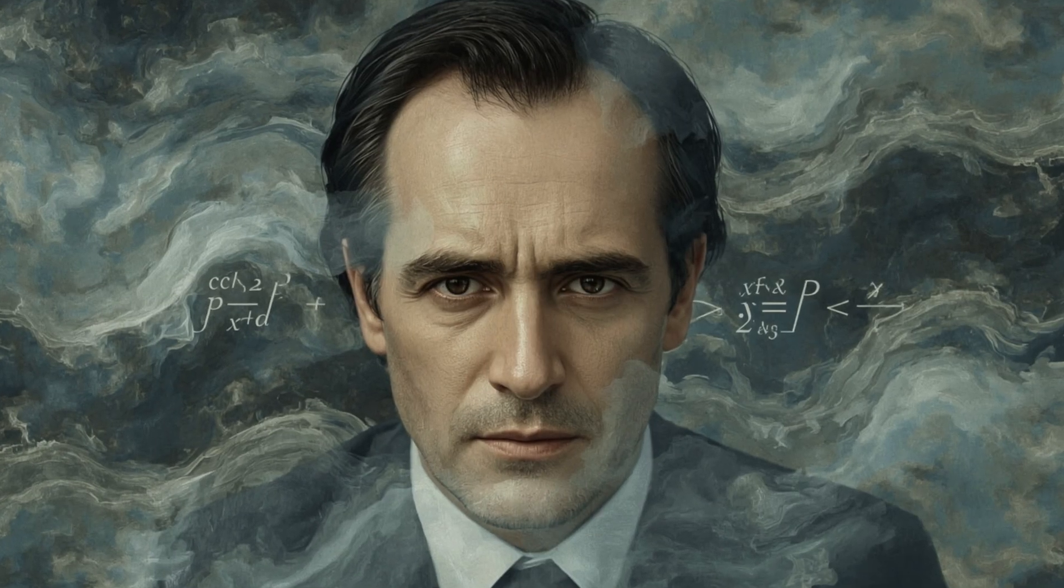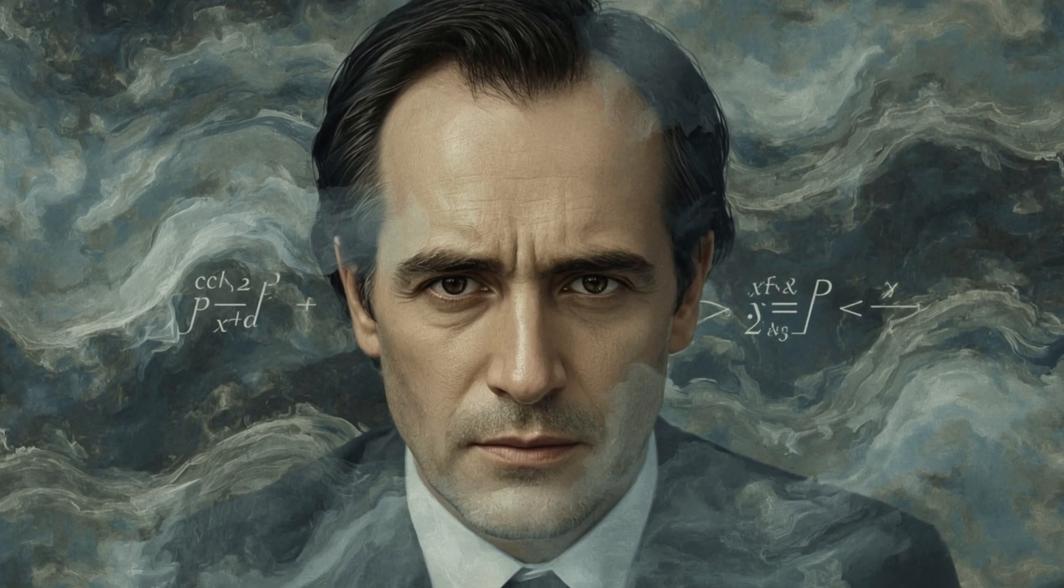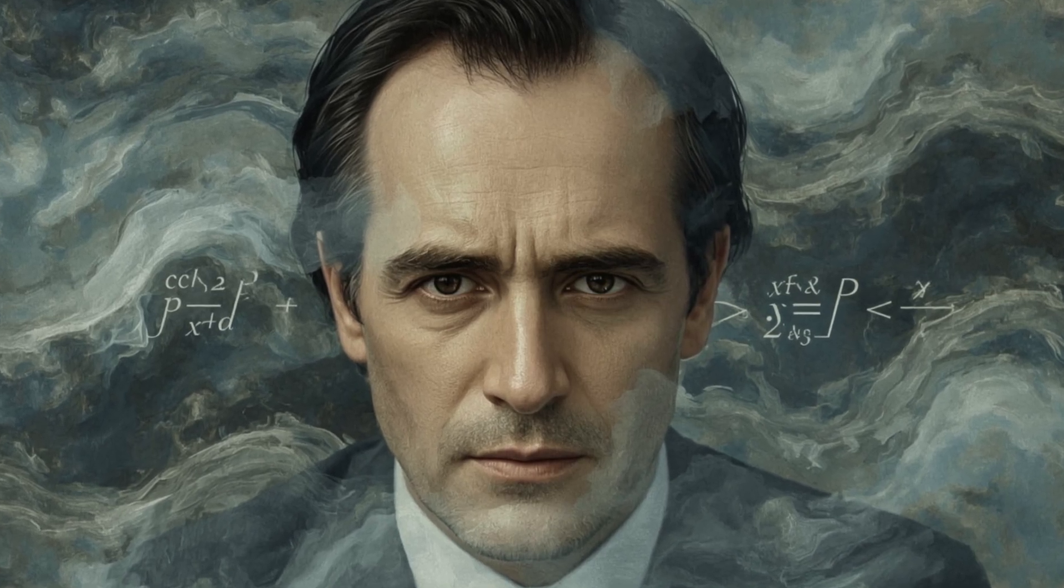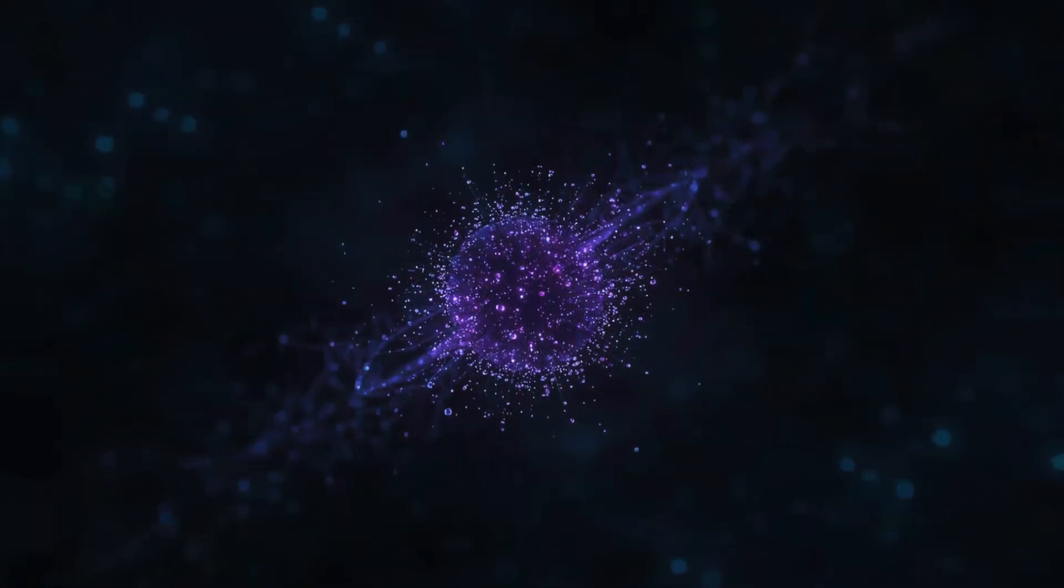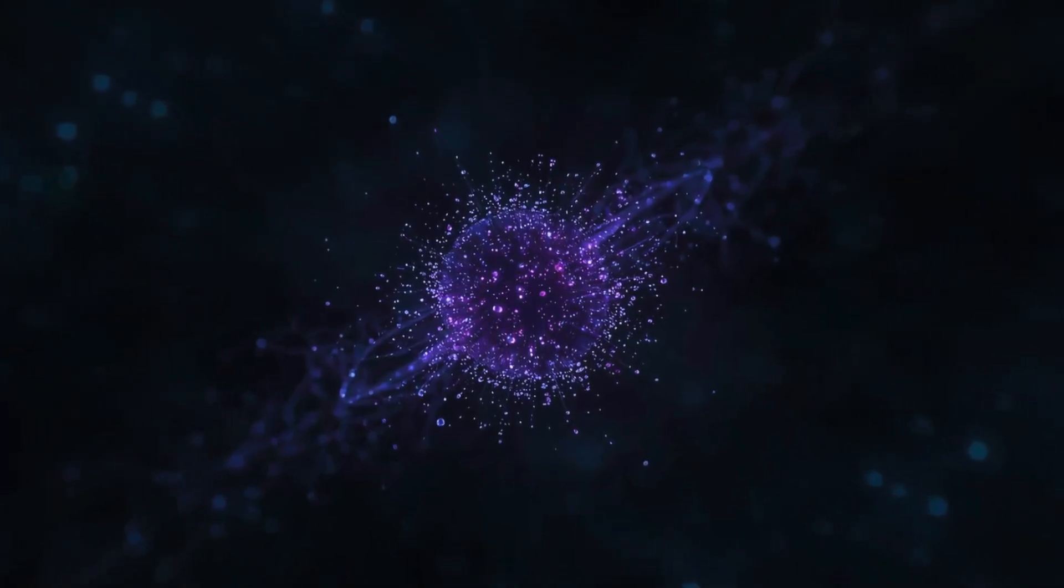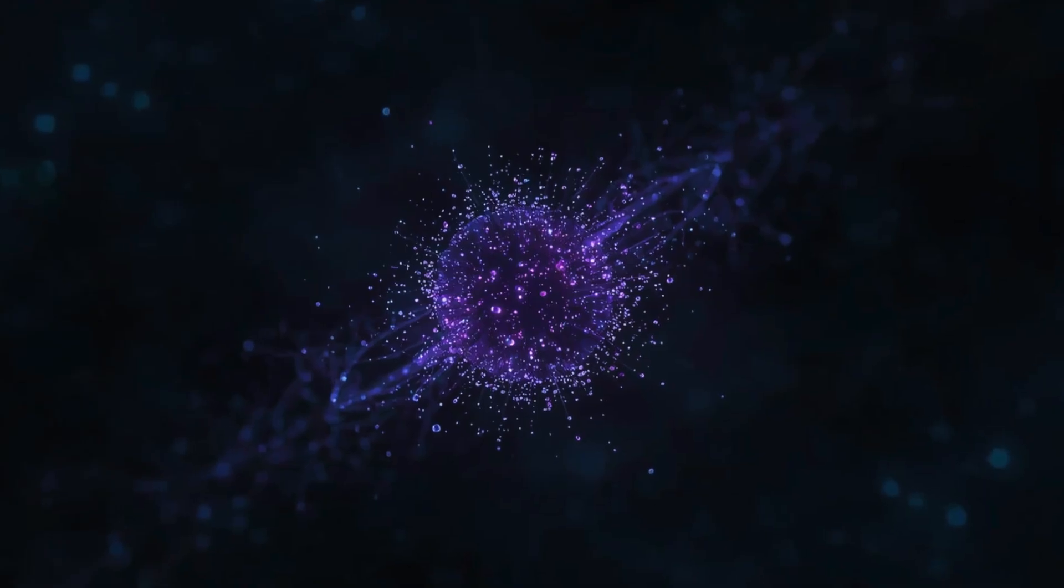Enter Werner Heisenberg. His uncertainty principle tells us that we can never know both the exact position and momentum of a particle simultaneously. The more precisely we measure one, the less precisely we know the other. This isn't a limitation of technology. It's a feature of nature itself.